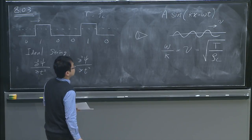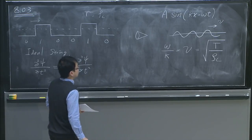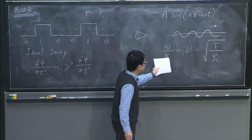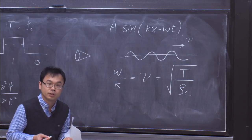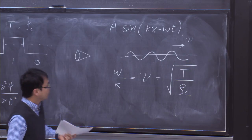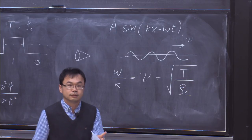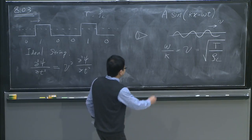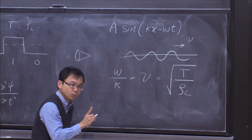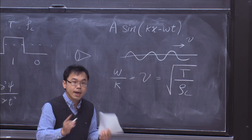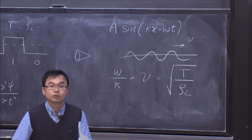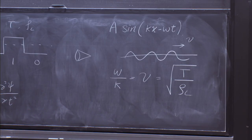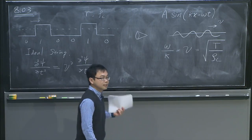Because ω/k equals the constant v, independent of k, waves with different wave numbers — different wavelengths — all propagate at the same speed. This means the speed of the harmonic progressing wave is independent of wavelength. If I prepare a square pulse on this idealized string, all the Fourier components travel at the same speed v, so the shape of the pulse is unchanged as it propagates.